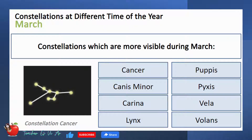The constellations most visible during March are Cancer, Canis Minor, Carina, Lynx, Puppis, Pyxis, Vela, and Volans.